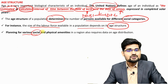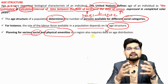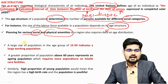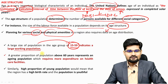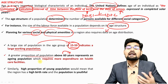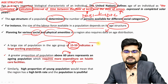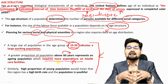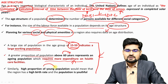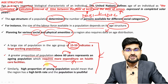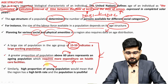Planning for various social and physical amenities also depends upon age structure. A large population in the age group 15 to 59 indicates a large working population. If a greater proportion is above 60 years, it means aging population is more in that country, requiring more expenditure on healthcare. A high proportion of young population means the country has a lot of potential — as we say, India has a huge youth population, so we have huge youth dividends to reap.